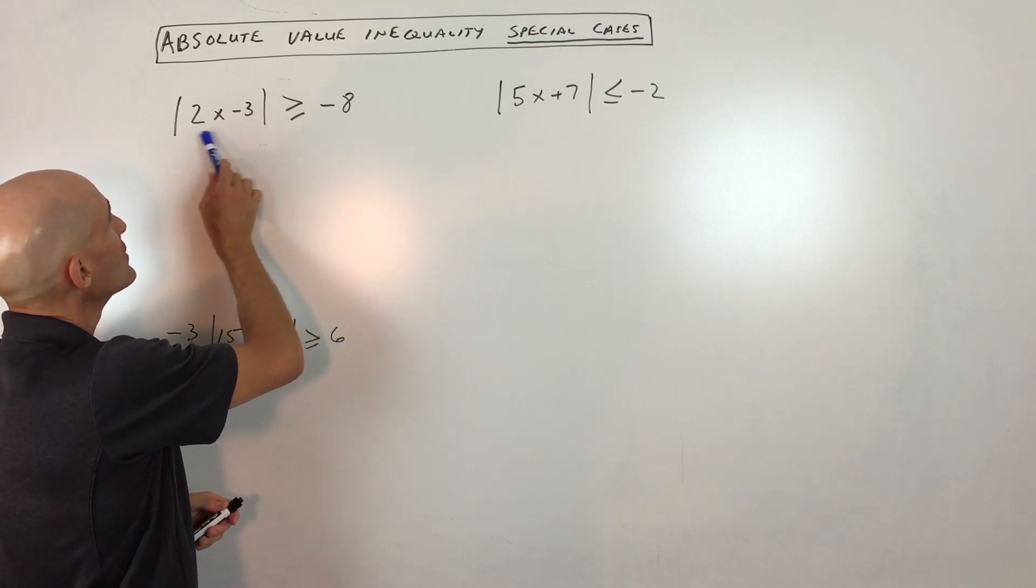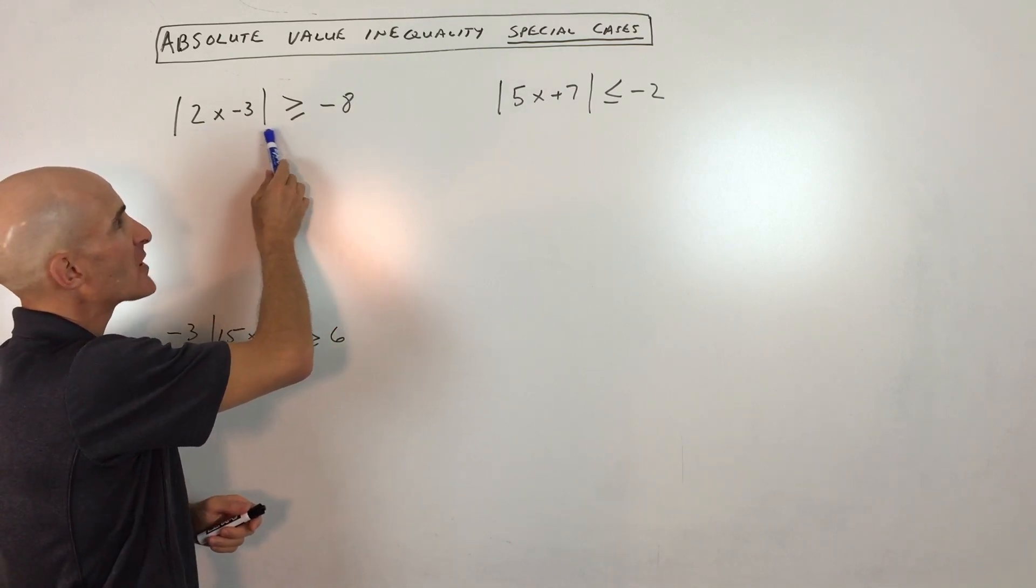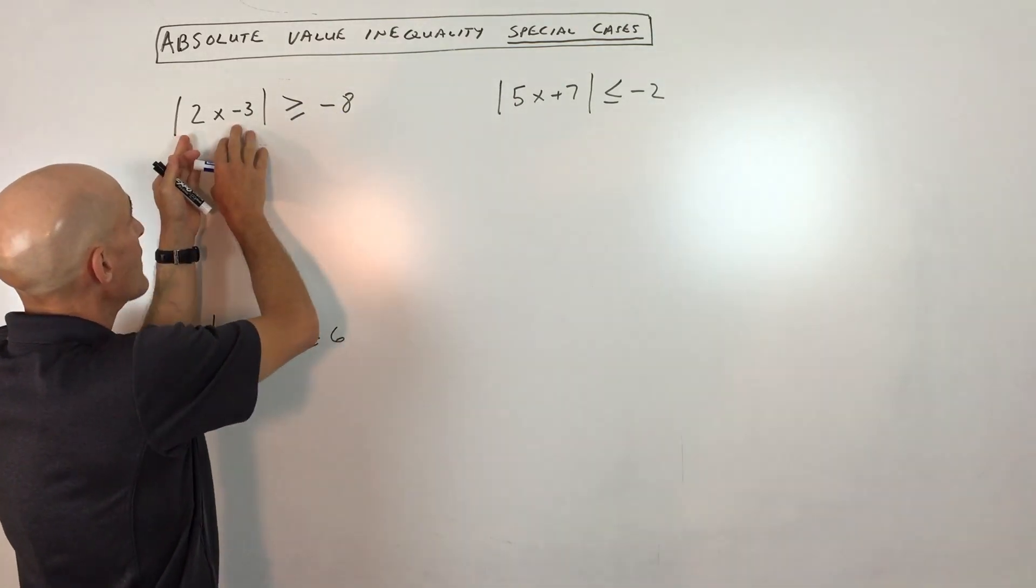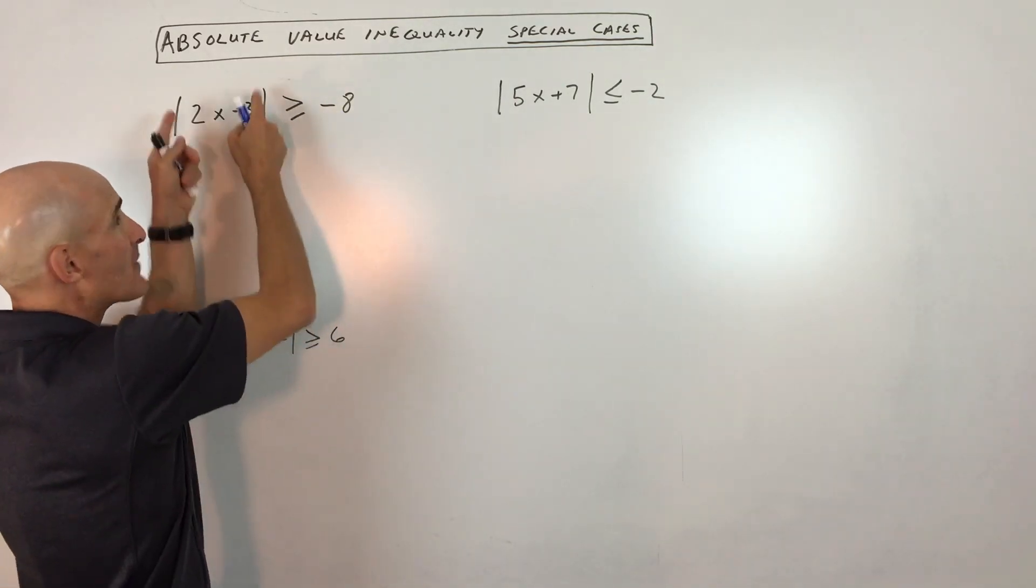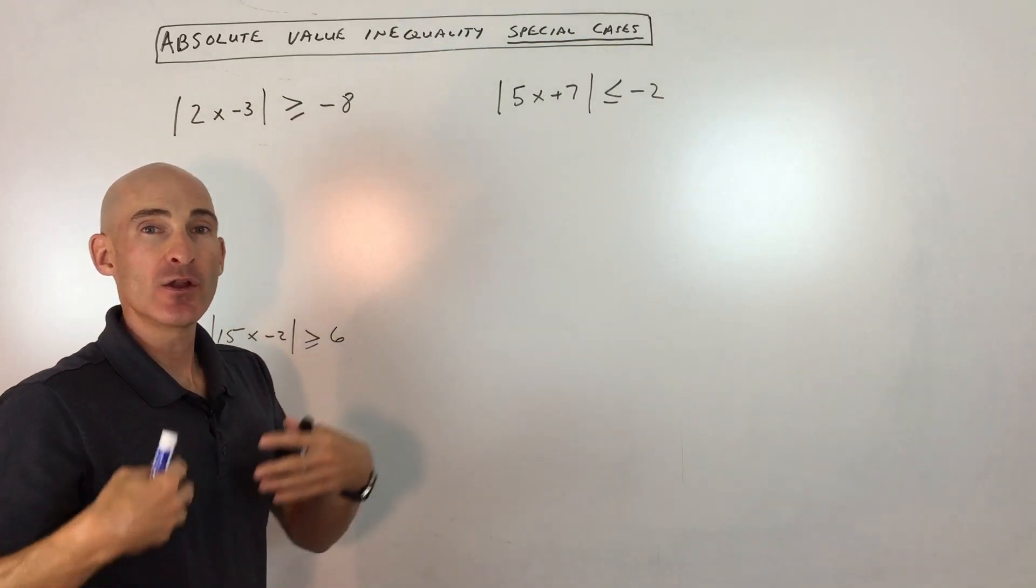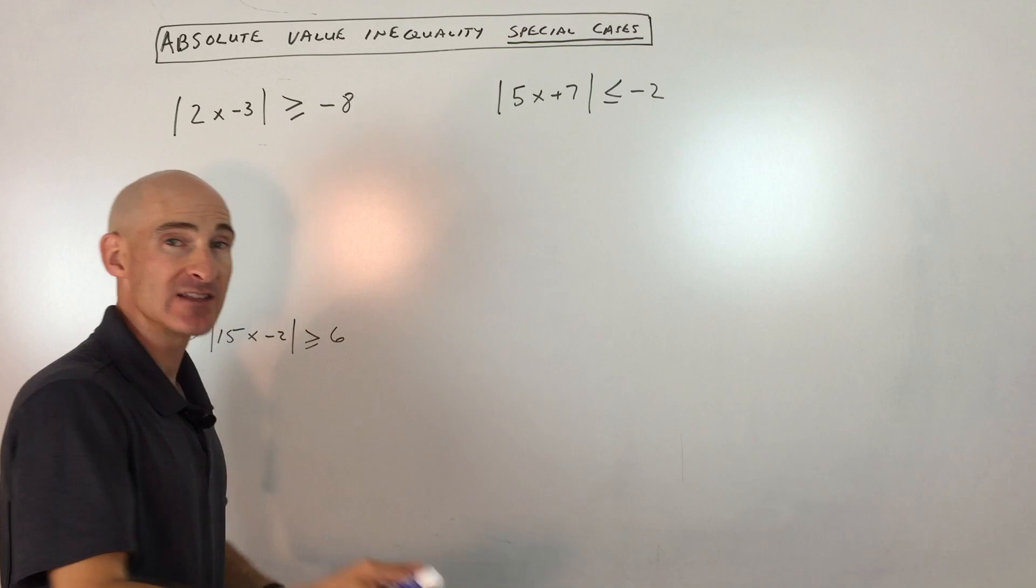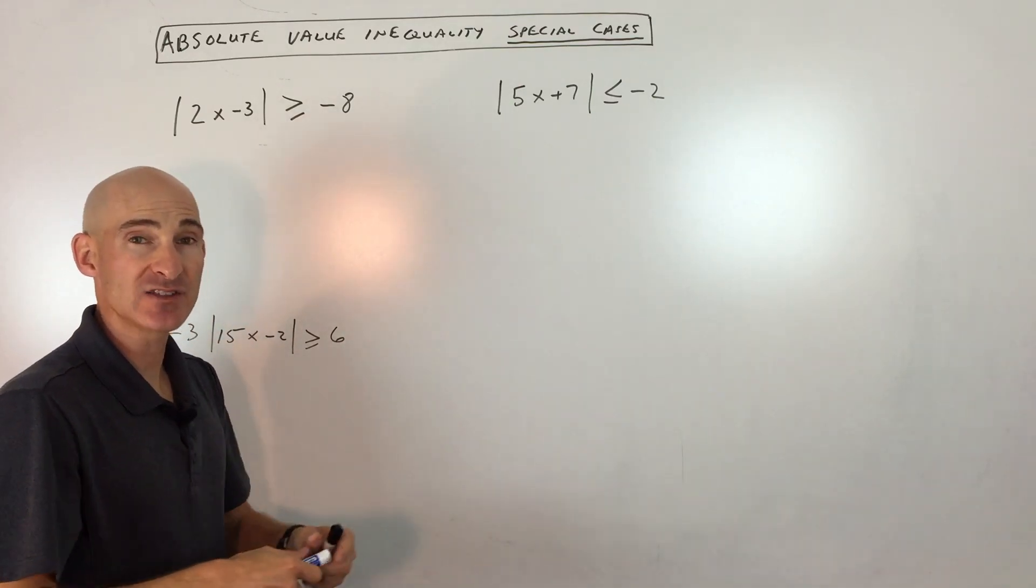Take a look at this first one right here. The absolute value of 2x minus 3 is greater than or equal to negative 8. Whatever's inside of these two absolute value bars, it'll always make it positive. So if you're taking the absolute value of a negative quantity, it'll be positive. If you take the absolute value of a positive quantity, it'll be positive.